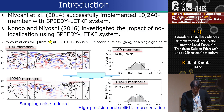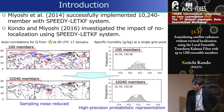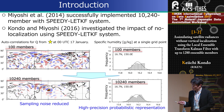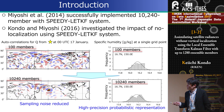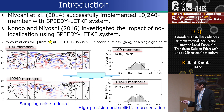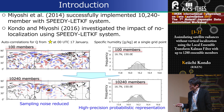This is our previous work. We successfully implemented 10,000-member data assimilation with the SPEEDY-LETKF system. With only 100 ensemble members, we cannot distinguish between important signals and contaminated signals. This histogram looks like a Gaussian structure, but with 10,000 members, you can see the long-range correlation from the star grid yellow grid point, and we can resolve the bimodal structure.